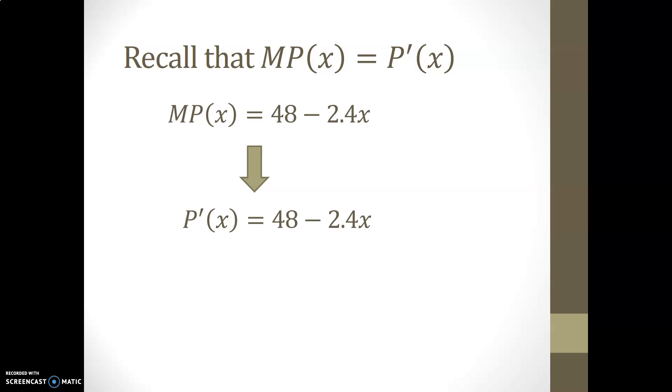And therefore, to find the profit function itself, we have to undo the derivative that had taken place on it. In other words, we're going to find the original profit function by solving the anti-derivative of 48 minus 2.4x.